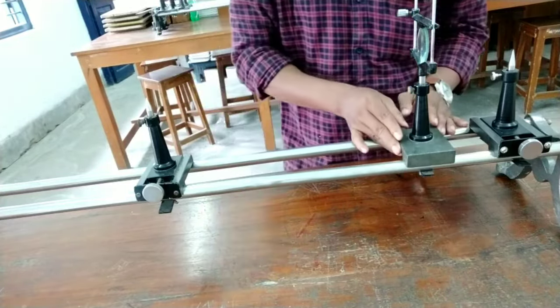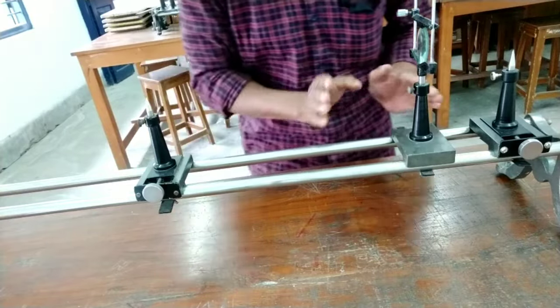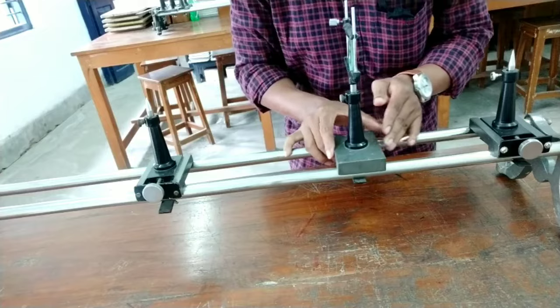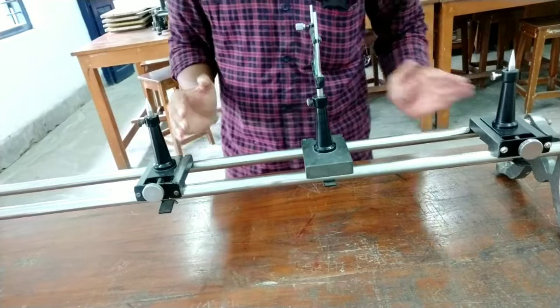First reading you will take near the object pin and second reading you will take near the image pin. Here remember you have to move the lens only. The two positions of the object pin and the image pin will be fixed.